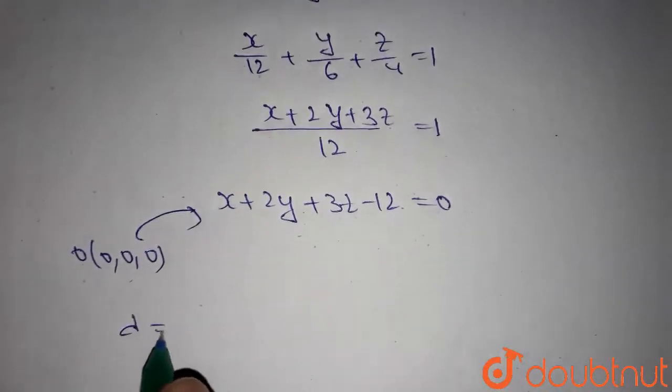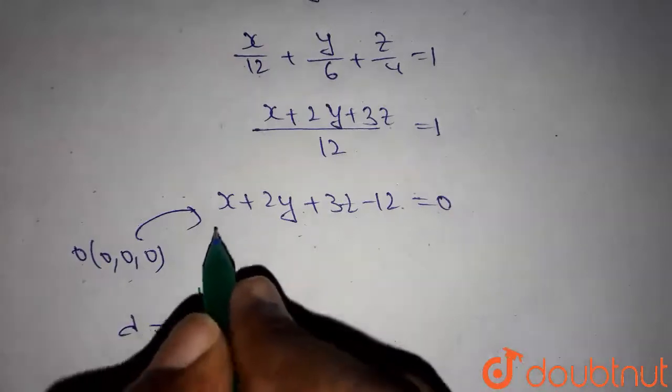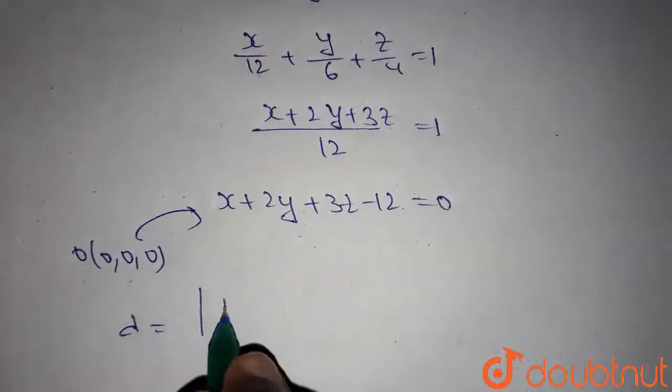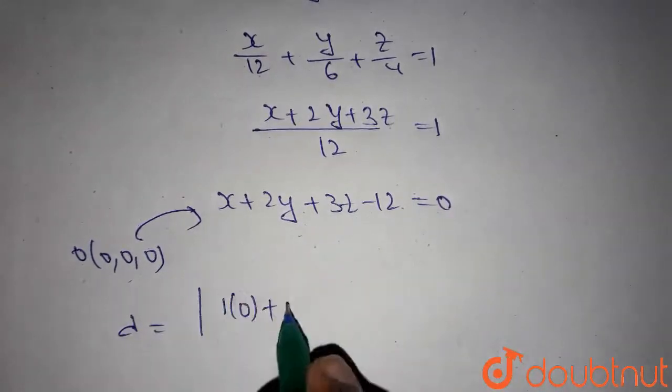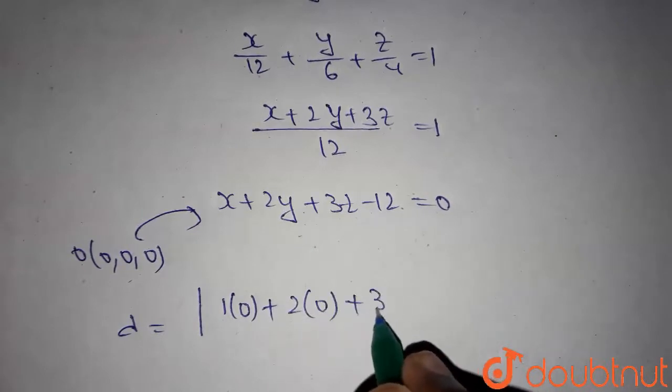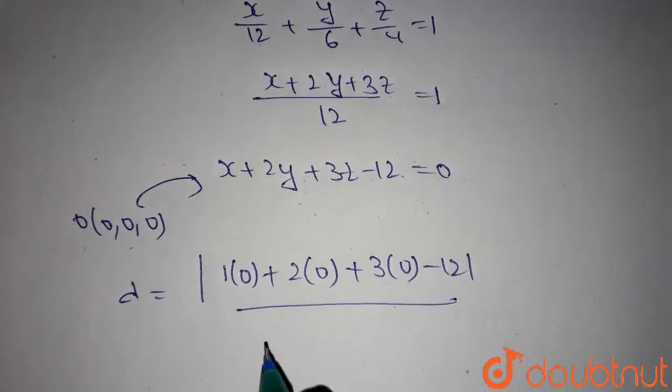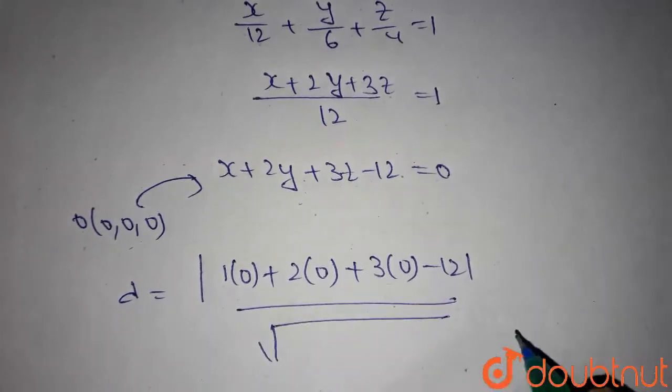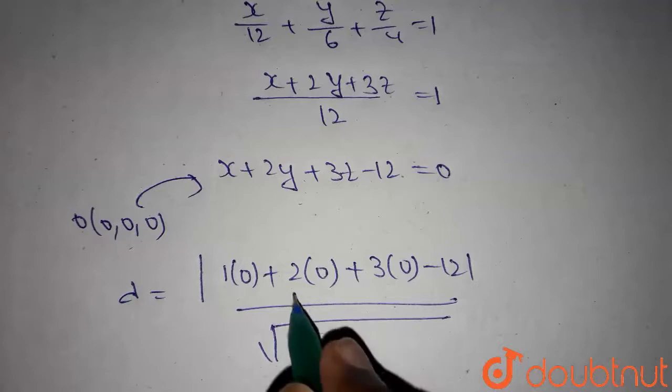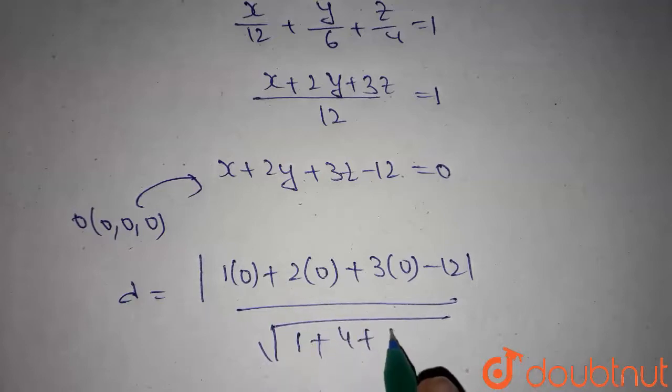We know that perpendicular distance is given by modulus of x coefficient times 0 plus y coefficient times 0 plus z coefficient times 0 minus 12 divided by root over x coefficient square which is 1, y coefficient square which is 4, z coefficient square which is 9.